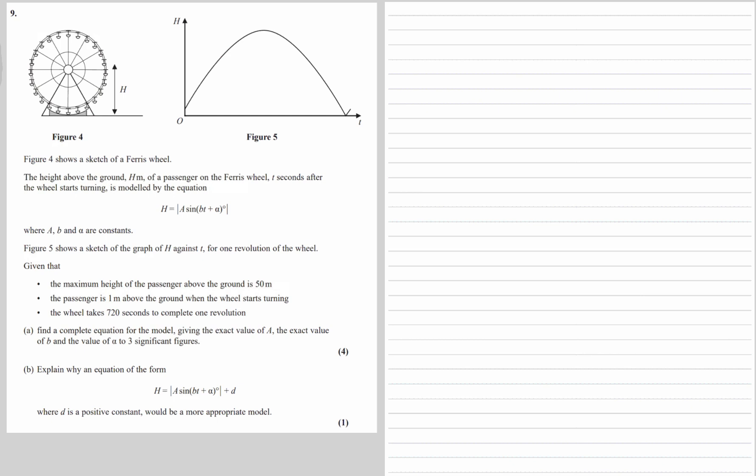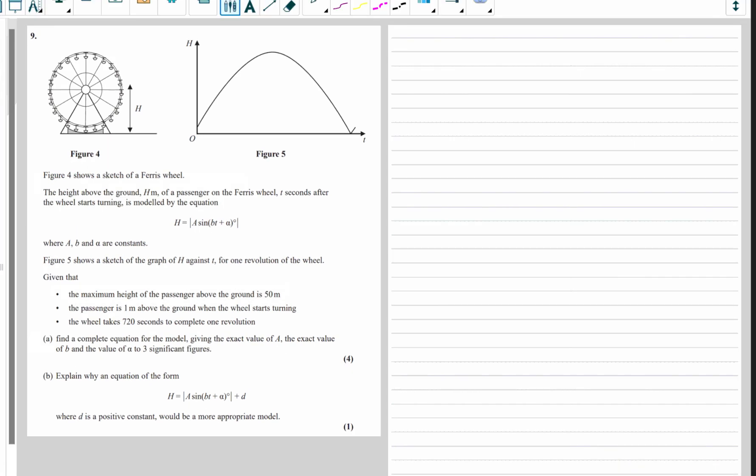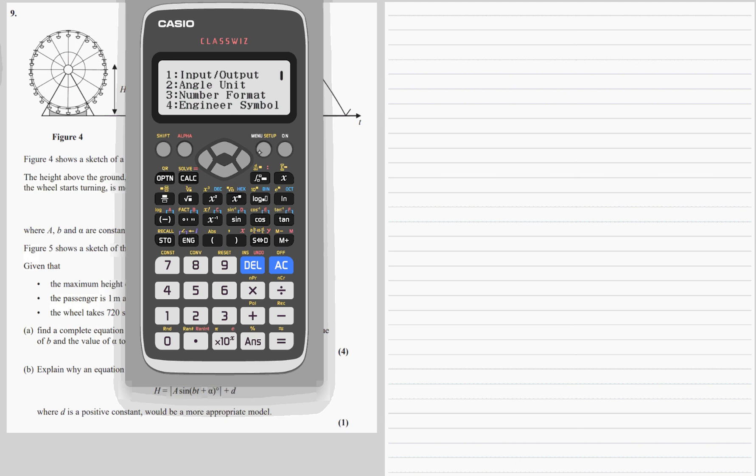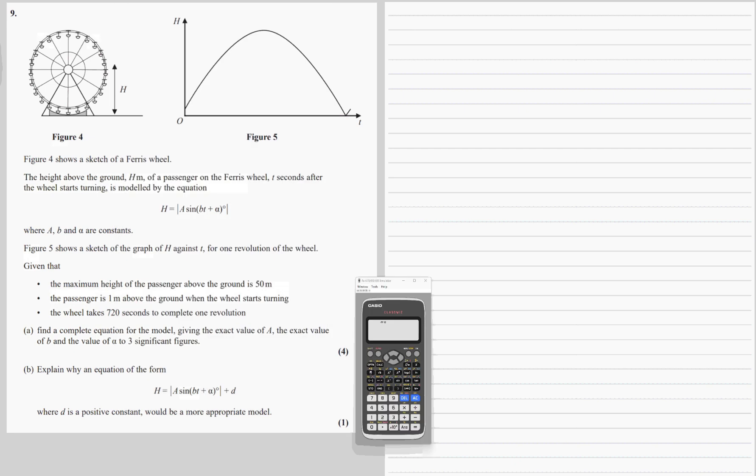Figure 4 shows a sketch of a Ferris wheel. The height above the ground, h meters, of a passenger on the Ferris wheel t seconds after the wheel starts turning is modeled by the equation h equals the modulus of A sine Bt plus alpha degrees. So our calculators need to be in degrees: shift, shift, set up, angle unit into degrees.